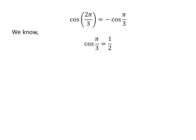We know cosine of pi upon 3 is equal to half. So cosine of 2 times pi upon 3 is equal to minus half.